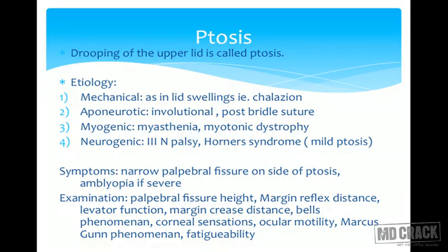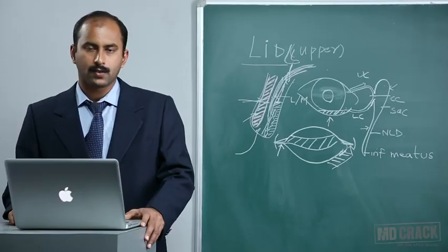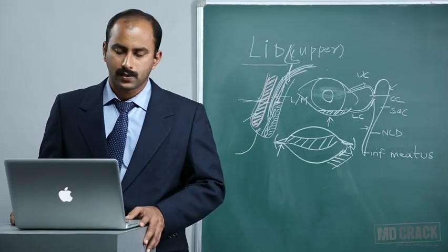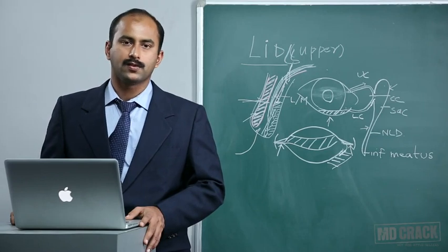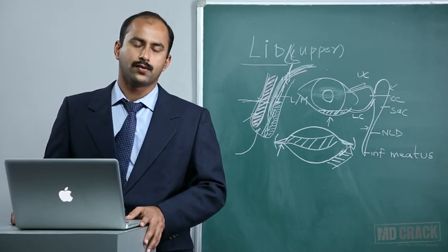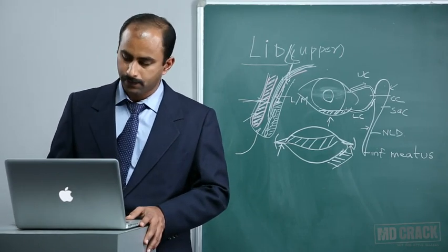Examination of a case of ptosis requires assessment of: palpebral fissure height, margin reflex distance, levator function, margin crease distance, Bell's phenomenon, corneal sensations, ocular motility, Marcus Gunn phenomenon, and fatigability. Examining all these criteria helps in diagnosing the cause of ptosis and formulating the management strategy.